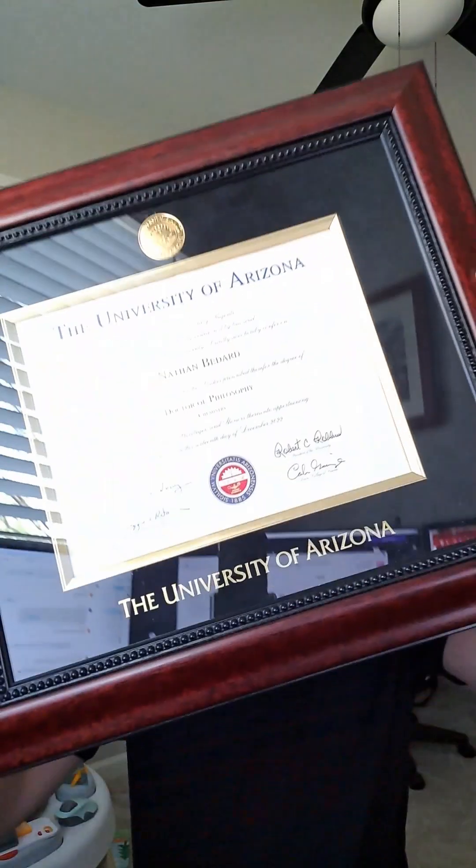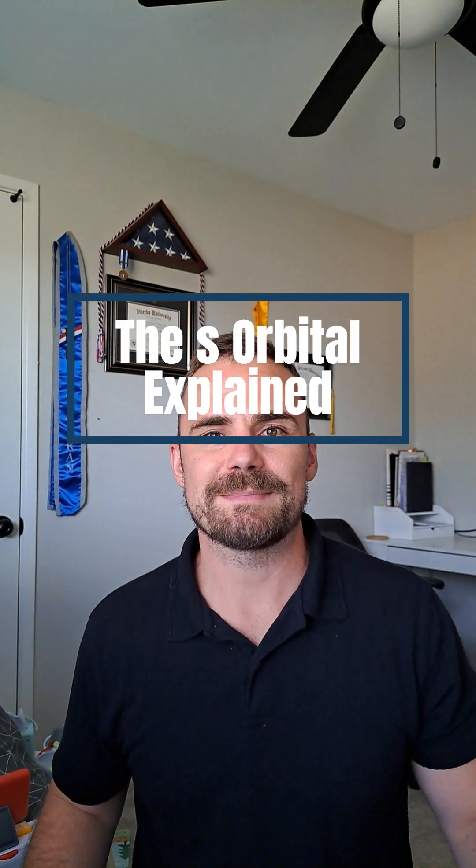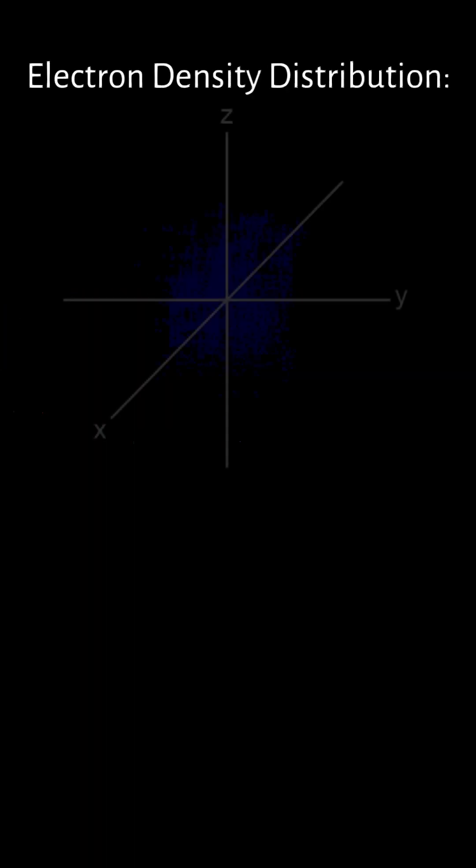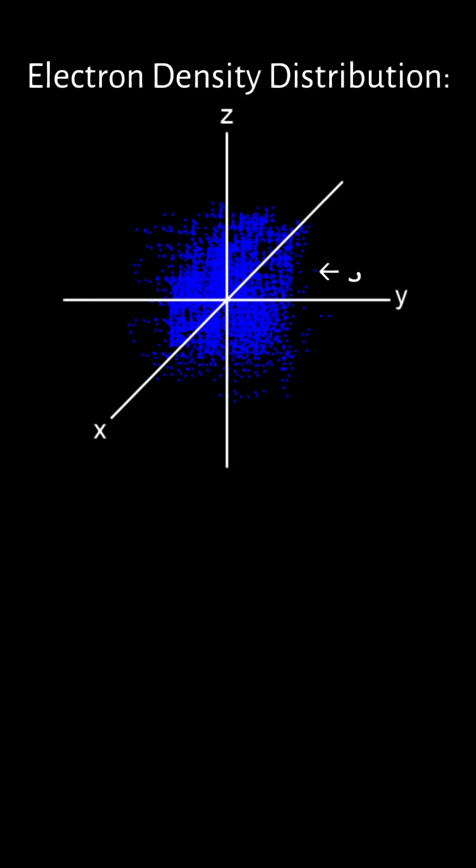This is my PhD in chemistry, and this is the s-orbital explained. Remember that the electron density distribution produces three-dimensional shapes known as orbitals which represent the probabilities of locating an electron.